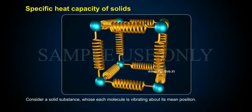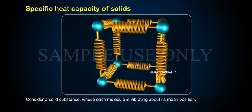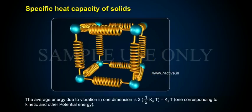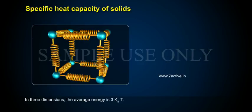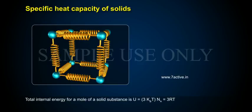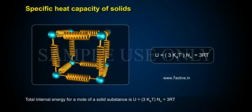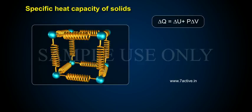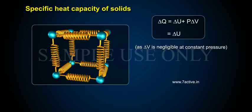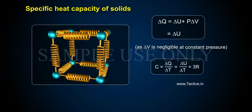Specific heat capacity of solids. Consider a solid substance whose each molecule is vibrating about its mean position. The average energy due to vibration in one dimension is 2 × 1/2 k_B T = k_B T, corresponding to kinetic and potential energy. In three dimensions, the average energy is 3 k_B T. Therefore, the total internal energy for a mole of a solid is U = 3 k_B T × N_A = 3RT. According to the first law of thermodynamics, δQ = δU + PδV ≈ δU at constant pressure (since δV is negligible). Hence, the specific heat of a solid is C = δQ/δT = δU/δT = 3R.